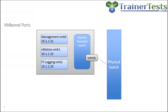A VMkernel port is a special type of port that you create on your vSphere standard or distributed switches that has its own IP address — it's sort of like a little entity unto itself. Virtual machine port groups are like ports on a physical switch that a PC would connect to. A VMkernel port is special though — it's used for traffic like vMotion, IP storage, fault tolerance, vSAN, and management.